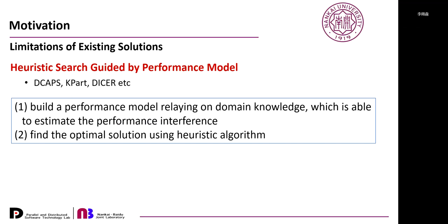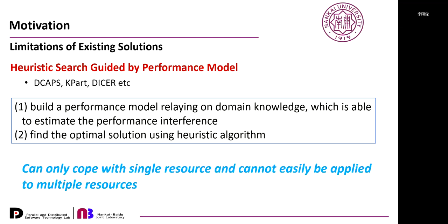Many existing works have been proposed to address these challenges. We divide them into three categories. The first category, which we call heuristic search guided by performance model, includes works like DCAPS and DEPART. The basic idea is to build a performance model relying on domain knowledge to estimate performance interference, then use heuristic algorithms to find the optimal solution. However, this approach can only cope with a single resource and cannot easily be applied to multiple resources, because it is very difficult to model complex contention behavior over multiple resources.